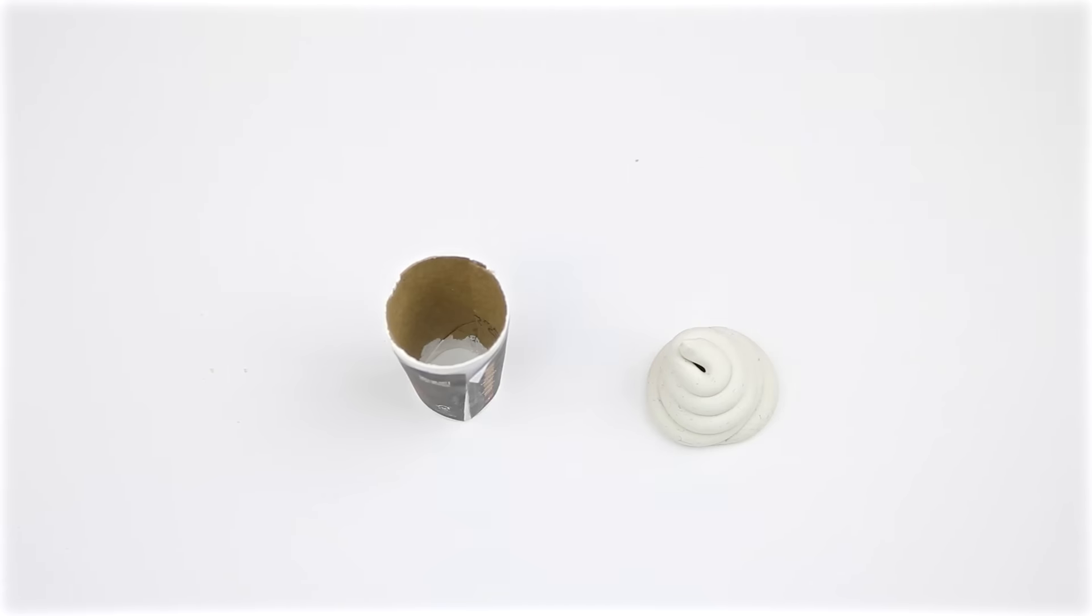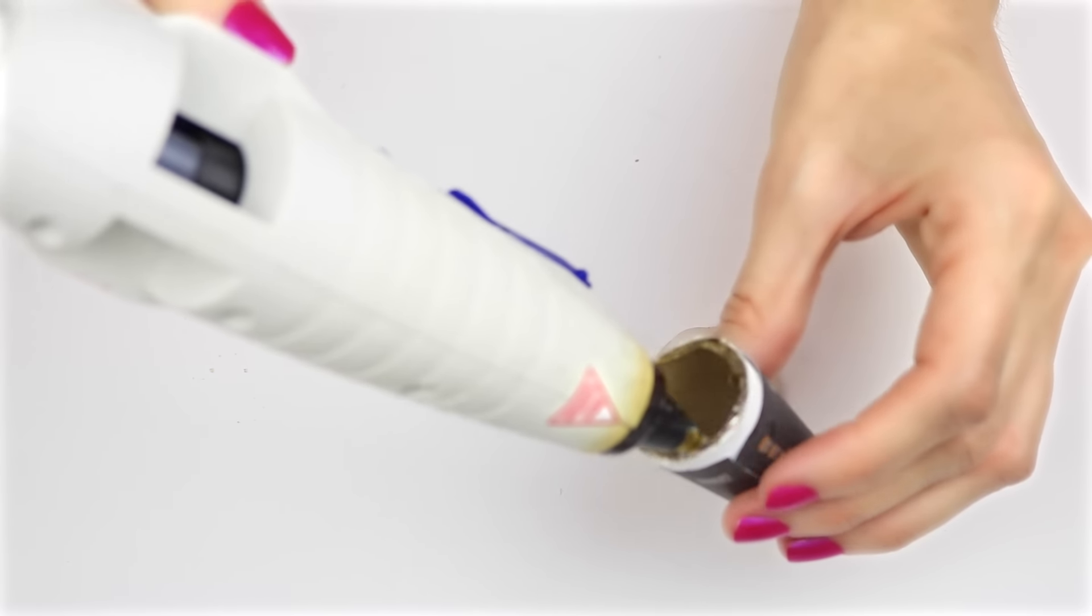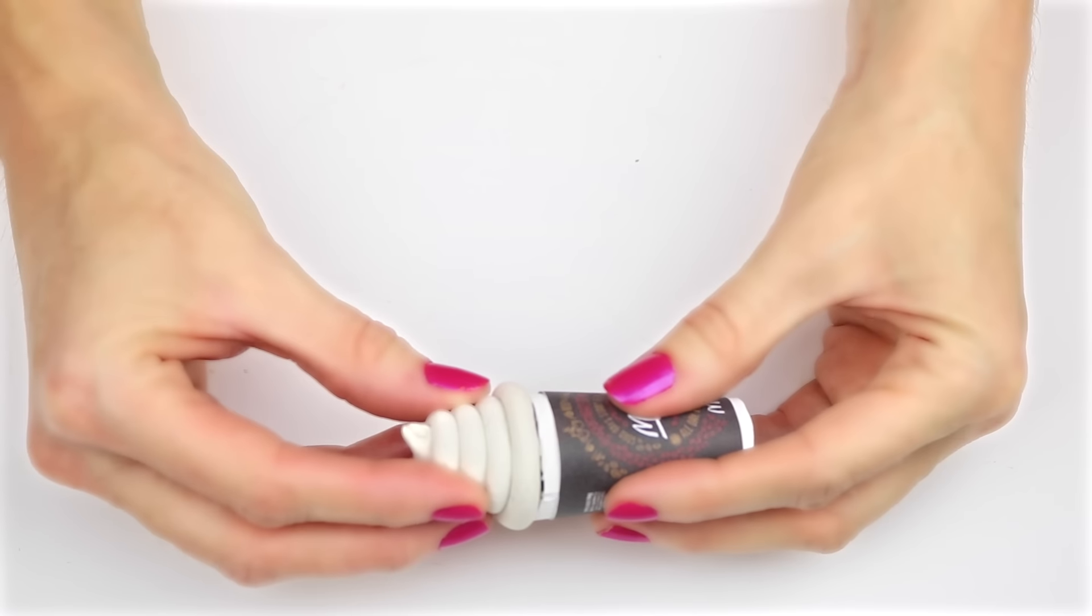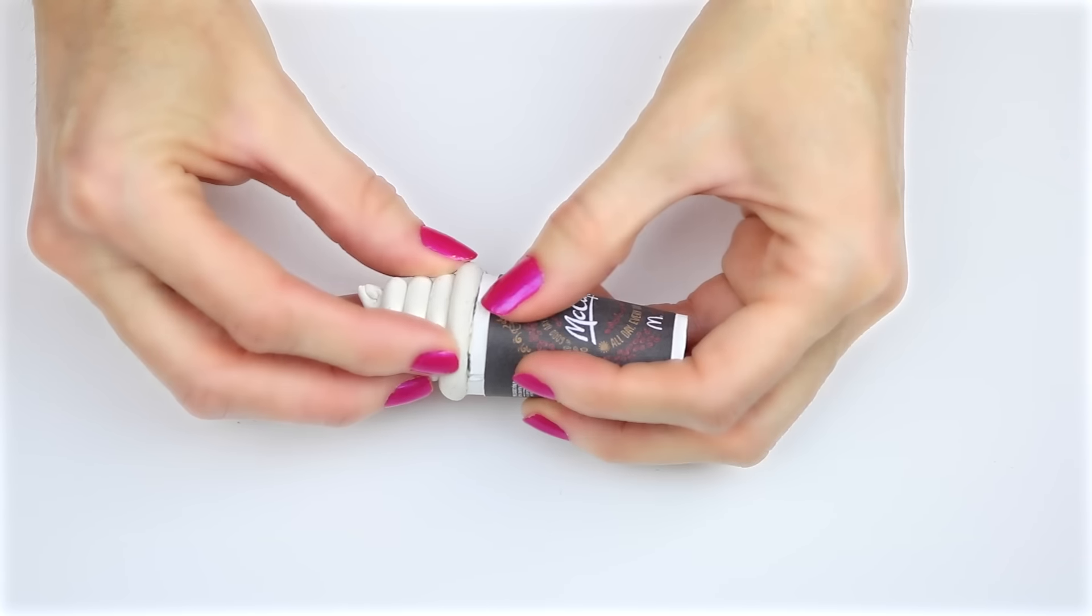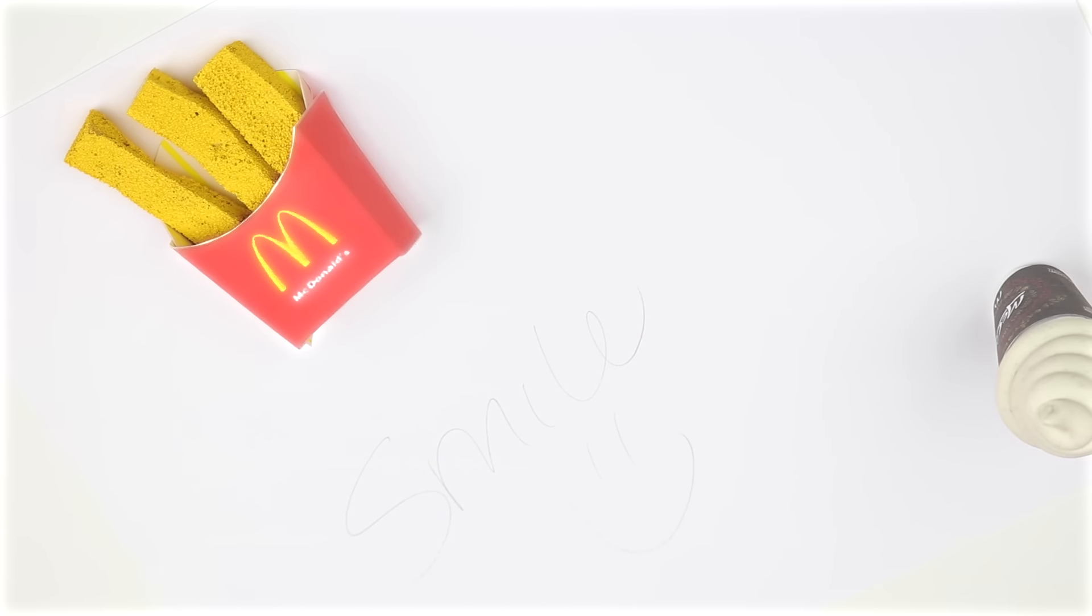After it's baked, hot glue it to the cup. And that is how easy it is to make this DIY mini eraser.